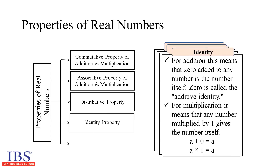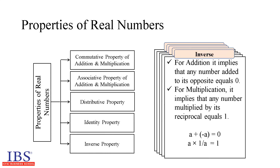Identity property: according to the identity property for addition, 0 added to any number gives the number itself — 0 is called the additive identity. The identity property for multiplication implies that any number multiplied by 1 gives the number itself — 1 is called the multiplicative identity. That is, a + 0 = a and a × 1 = a. Inverse property: for addition, any number added to its inverse equals 0. The inverse property of multiplication implies that any number multiplied by its reciprocal equals 1. That is, a + (−a) = 0 and a × (1/a) = 1.